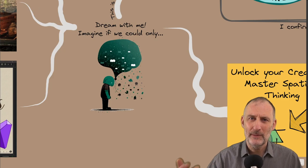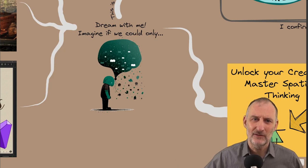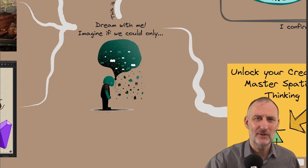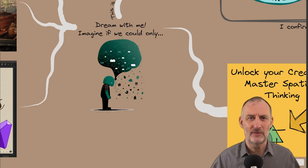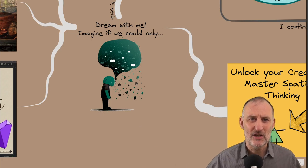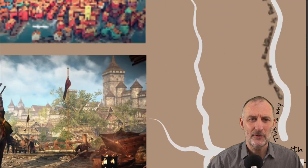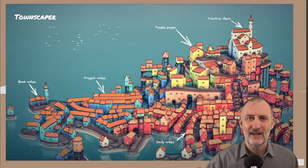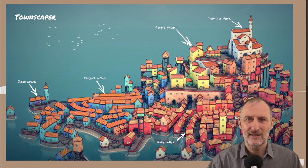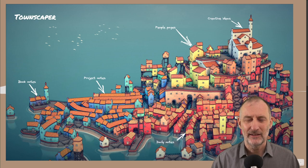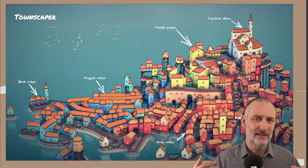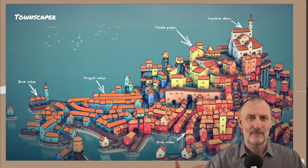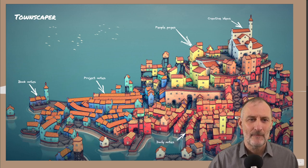So now dream with me for a moment, and let's see how this could be turned into a knowledge management system of the future that is spatially driven. So the first example I have in mind, I've taken this from the game Town Scraper. This is a silly little game. You can build a town for yourself. The town looks beautiful, and it's a very relaxing gameplay. I like to play with this.